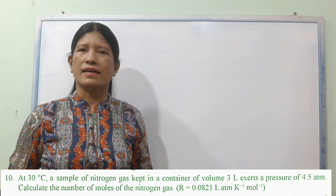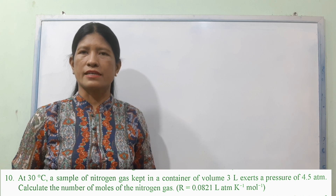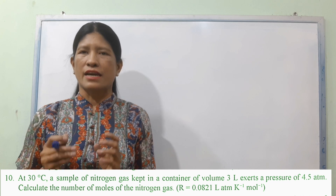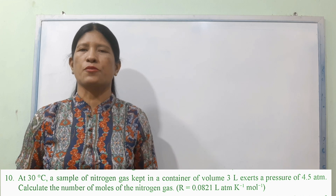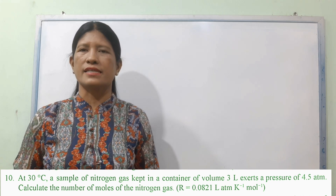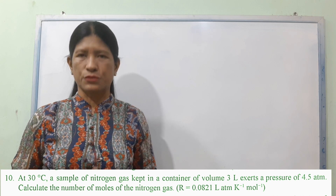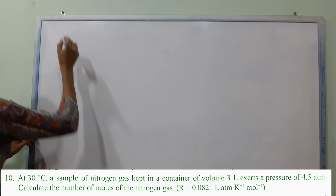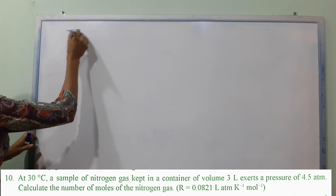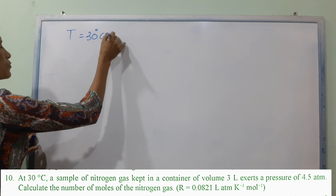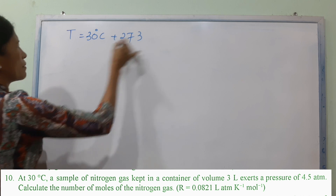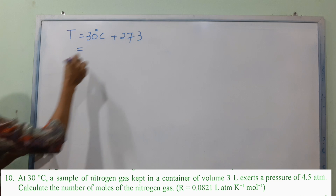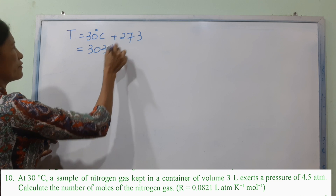Now, let's put it at 30 degrees Celsius. If you want to use the ideal gas law, the nitrogen gas has a volume and a pressure. The nitrogen gas has a number of moles. T is equal to 30 degrees Celsius, which will be 303 Kelvin.